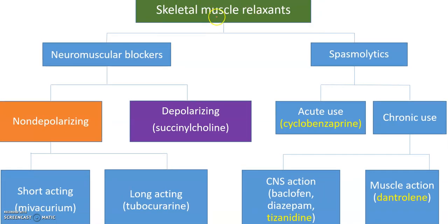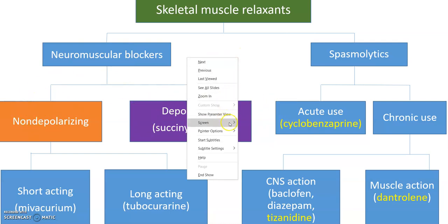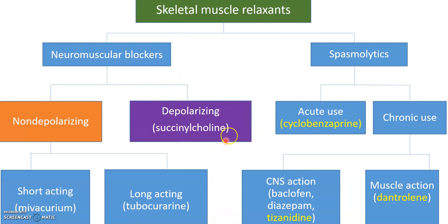There are two main categories of skeletal muscle relaxants: neuromuscular blockers and spasmolytics. Neuromuscular blockers are divided into depolarizing and non-depolarizing. Non-depolarizing can be further divided into categories including short-acting and long-acting — so we divide non-depolarizing mainly based on duration of action. We'll discuss that in further detail later.